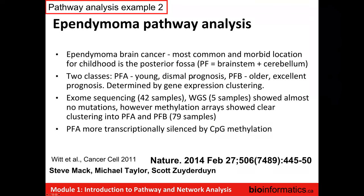The second project is ependymoma pathway analysis. Ependymoma is a pediatric brain cancer — the third most common type of brain cancer in children. The most common and morbid location in childhood is the posterior fossa, which is the back of the head, the brain stem and the cerebellum. Previously people had known based on the anatomy of where the tumor occurs how serious it is — if it occurred at the back of the brain, it was known to be the most dangerous type.